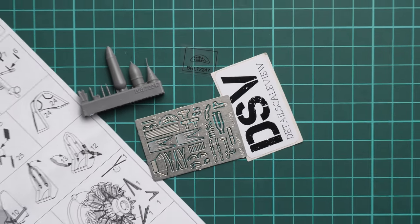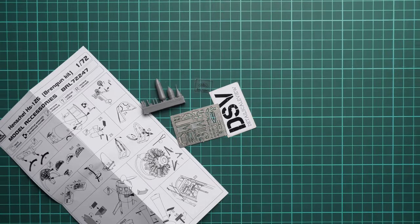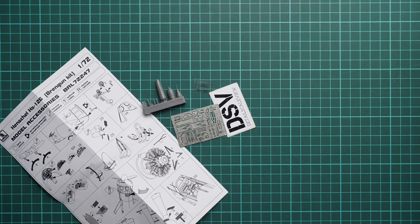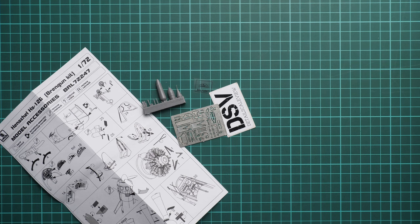Frankly speaking, I was expecting a bit less, but as you can see this Henschel 126 in 1/72nd scale will get a really bunch of upgrades which will be noticeable on the small aircraft. Of course, you can get it already on the official Brengun website.